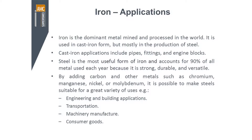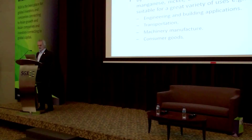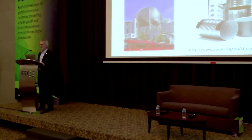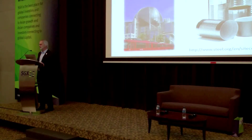Some of the applications include engineering and building structures. It's crucial for transportation, machinery, manufacture, and a lot of consumer goods that you've got in your home today are made with iron as a core. So it's essential to the world as we know it today. Some examples that you'll see it in: buildings, vehicles, commercial applications, cans and tins and steel products. It's basically throughout societies — it's a critical metal.